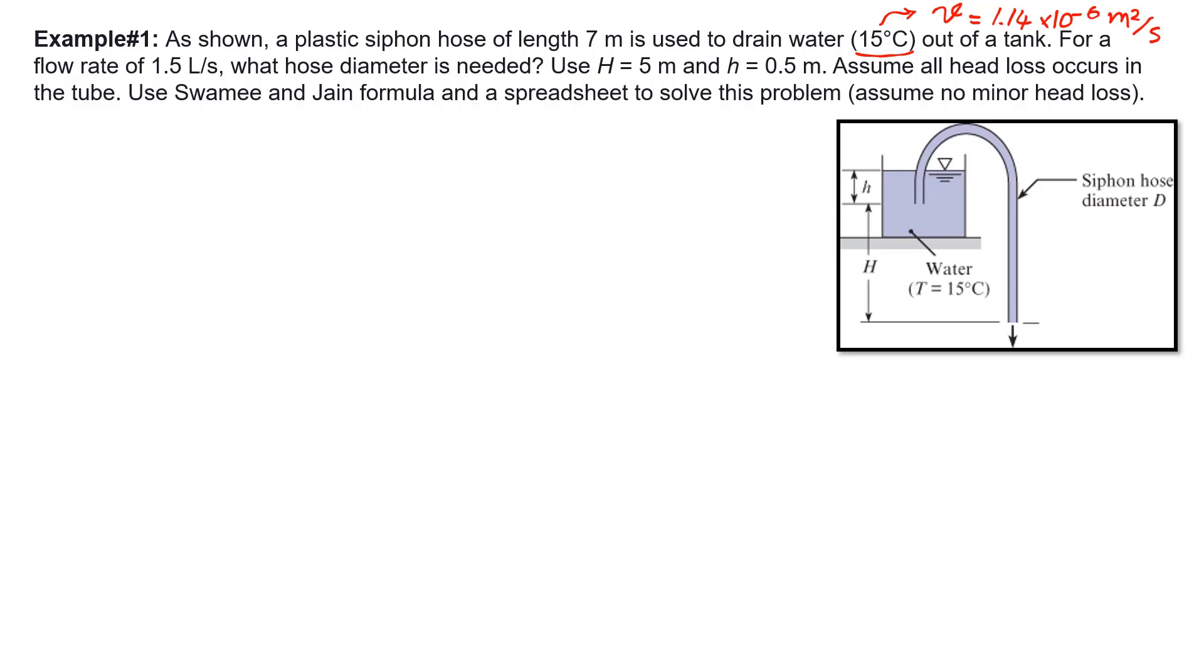Flow rate is 1.5 liters per second. What diameter is needed? Because we are going to find the diameter of the pipe, this is a case 3 problem or a design problem.